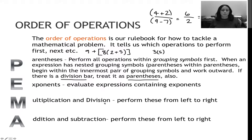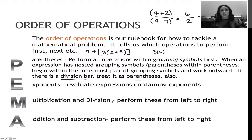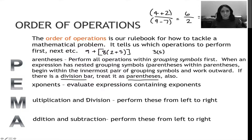Then you do all multiplication and division in one step from left to right. It might take two or three steps depending on what you have, but multiplication and division go strictly left to right. What you should not do is perform all the multiplication first and then all the division separately, because that would be incorrect.